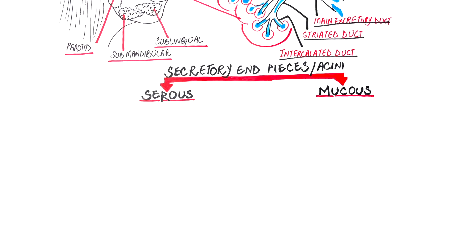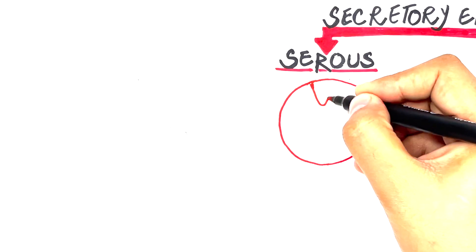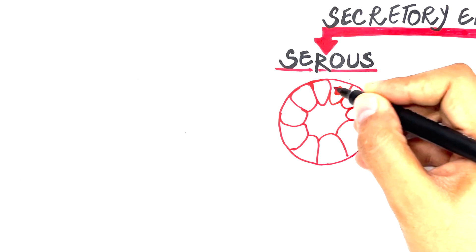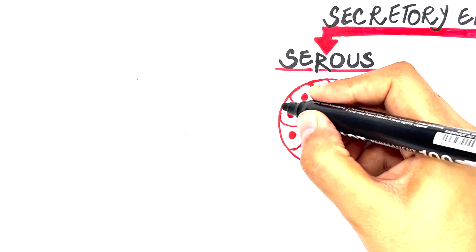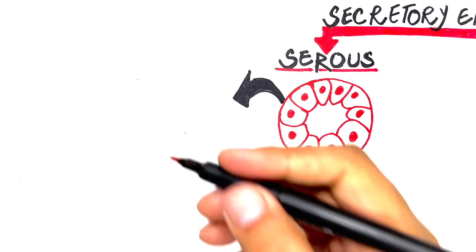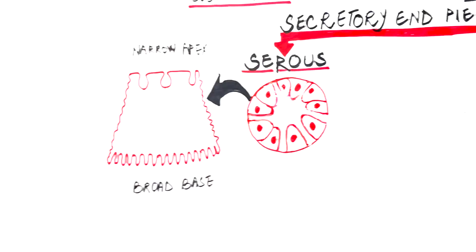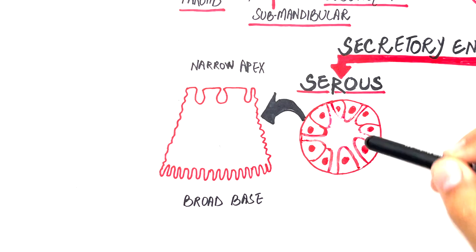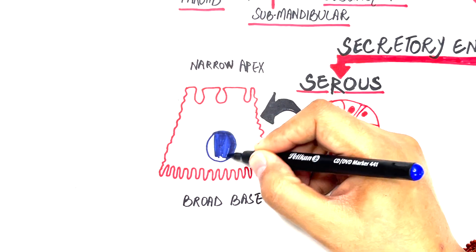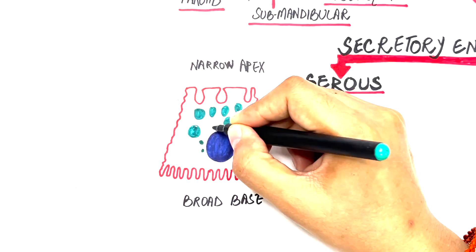The cells of the serous acini are arranged such that the acini are spherical. Each serous acinus consists of almost 8 to 10 cells. The cells are pyramidal, with the broad base adjacent to the underlying connective tissue stroma and the narrow apex facing the lumen. The lumen extends between cells as finger-like projections called intercellular canalicoli, which increase the surface area. The nuclei are located basally, and numerous secretory granules are seen in the apical cytoplasm, almost ready to enter the lumen via exocytosis.